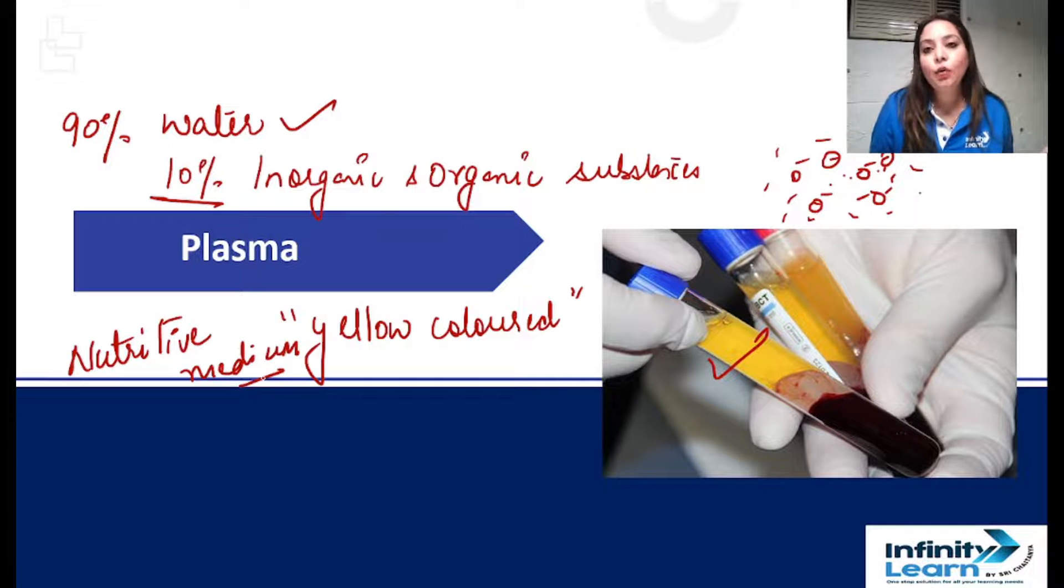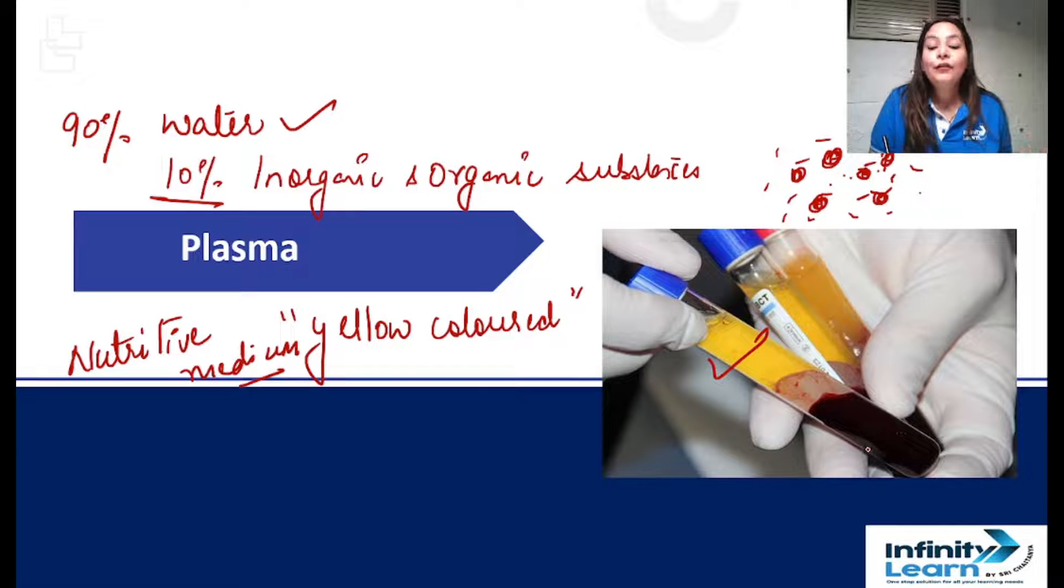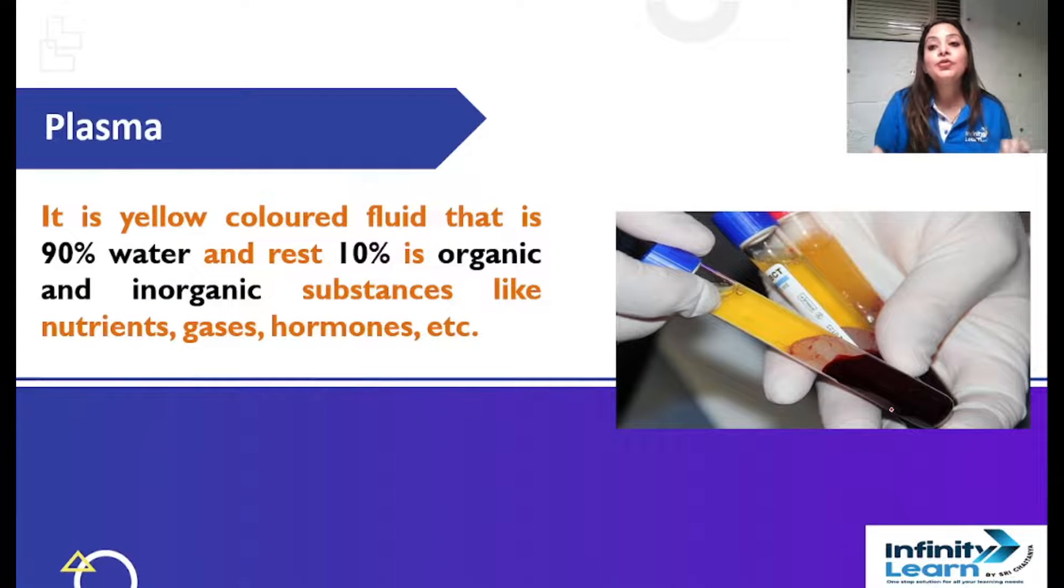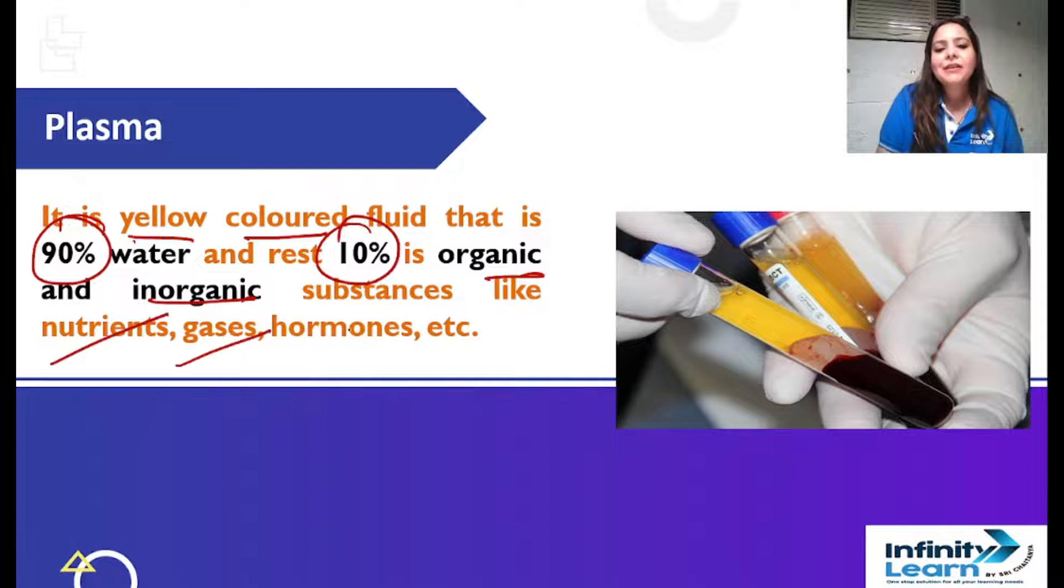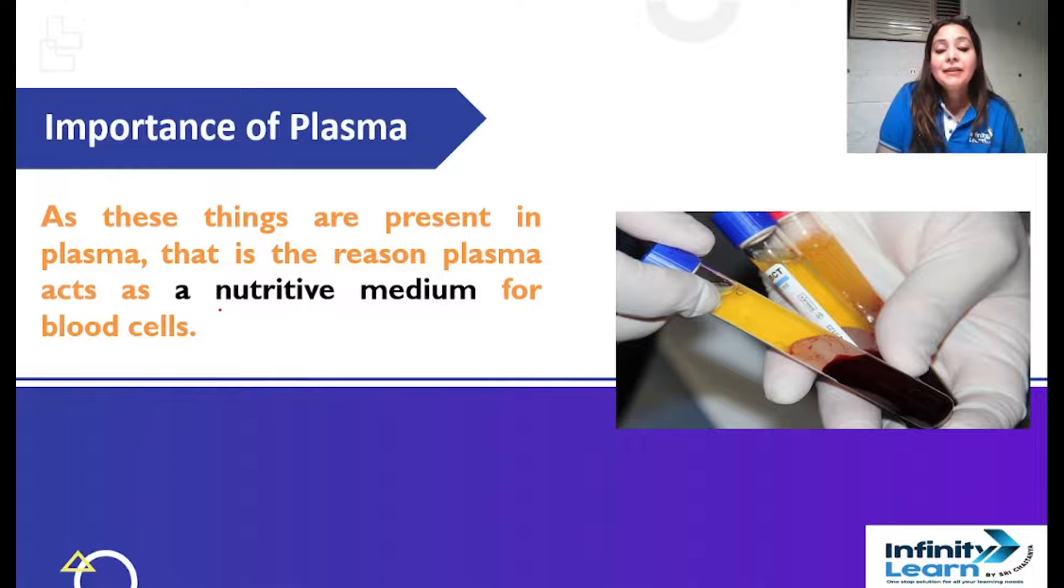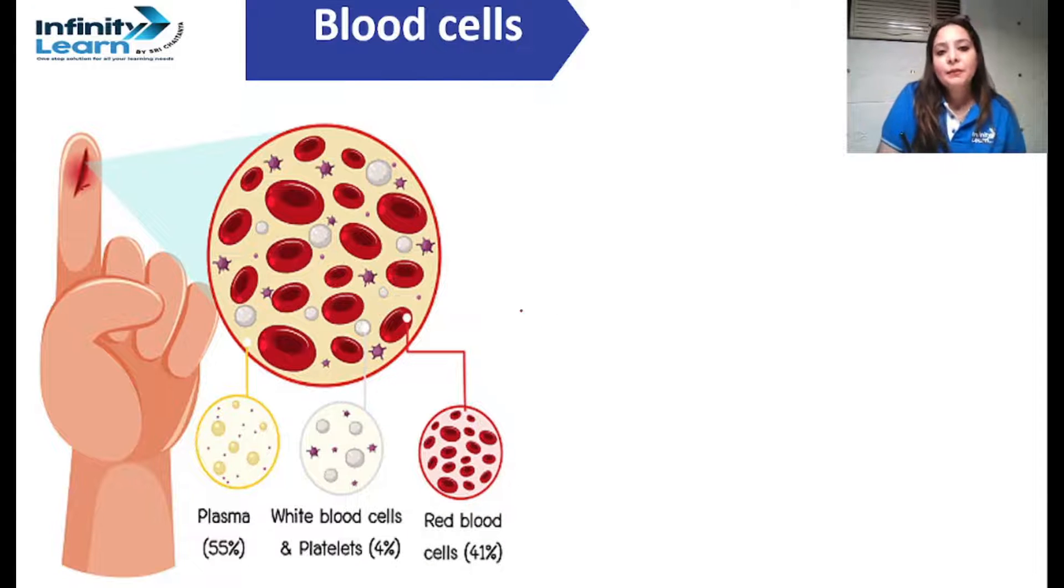If there is no plasma, then the blood cells cannot survive. Their survival requirements are fulfilled by plasma. So plasma acts as a nutritive medium. If someone asks you about plasma, you can tell them it's a yellow colored fluid, 90% water, 10% organic or inorganic substances like nutrients, gases, hormones, etc.